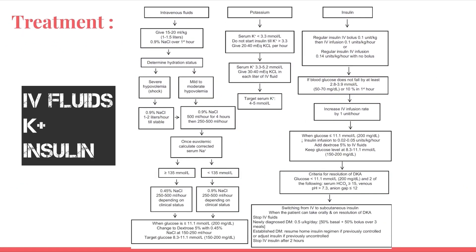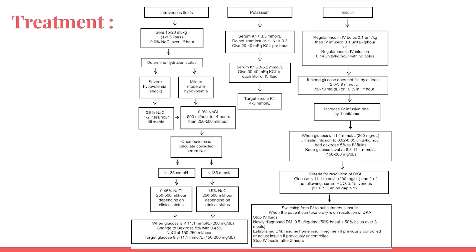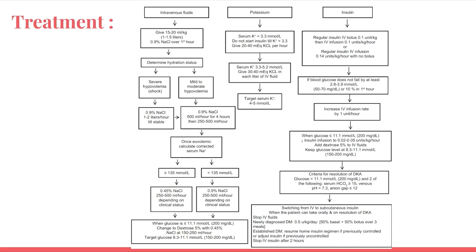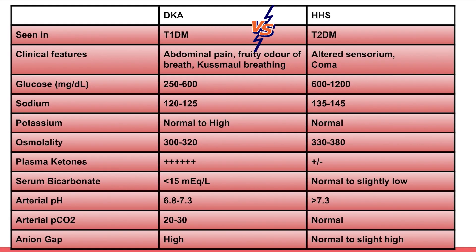Take-home points: for IV fluids, know the correct volume and why sodium levels matter; target glucose for insulin; regular insulin is used — not long-acting — and always given IV, not subcutaneous. Subcutaneous is only started when the patient can take orally. Resolution criteria are important. Bicarbonate is not generally given — only in very severe acidosis with pH less than 6.9.